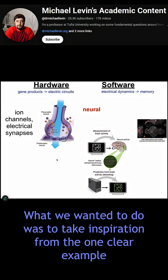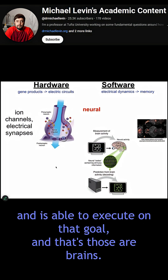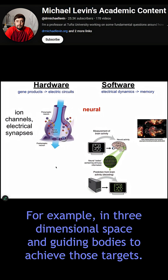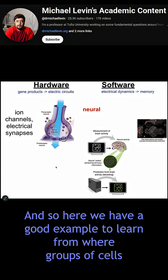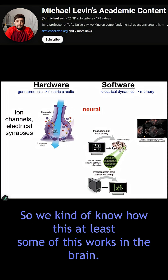What we wanted to do was take inspiration from the one clear example we know where a group of cells has a goal and is able to execute on that goal — and that's brains. We know that what nervous systems are really good at is storing targets in three-dimensional space and guiding bodies to achieve those targets. Groups of cells can represent future goals and minimize distance from those goals to meet them. We at least partly know how this works in the brain.